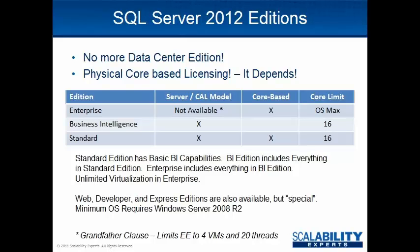Standard Edition may be licensed under the Server CAL model or the core-based model. The Server CAL model means that your server has a license to run SQL Server — CAL stands for Client Access License. Any device or any person that needs to access data on SQL Server must have a license in order to do so. Many organizations will have a Server CAL licensing agreement already in place, so they can essentially buy one server license and have as many CALs for devices and users that they need.